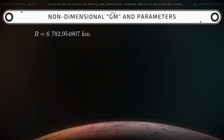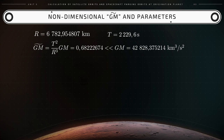Now, with R equals 6,782.94 km and capital T equals 2,229.6 seconds, the expression for the non-dimensional gm̃ — which equals T² over R³ times the dimensional GM — will provide a result of 0.6822 units. This result is significantly smaller than the dimensional GM, which equals 4.2828 × 10⁴ km³ per second squared.